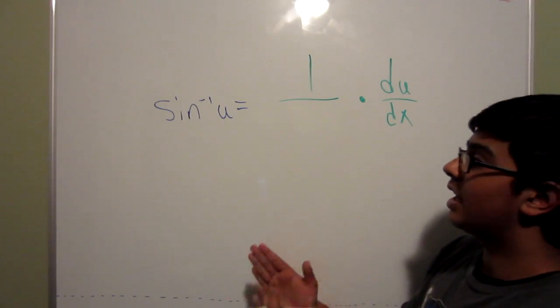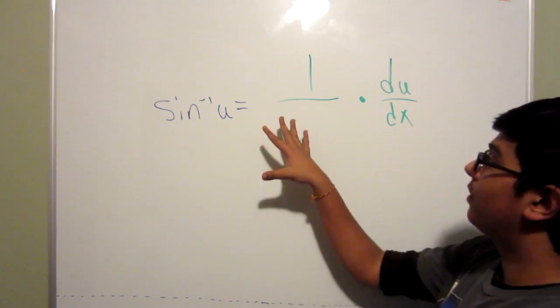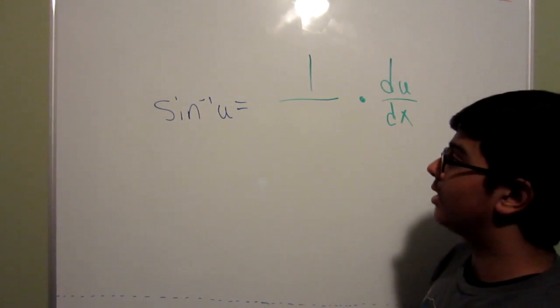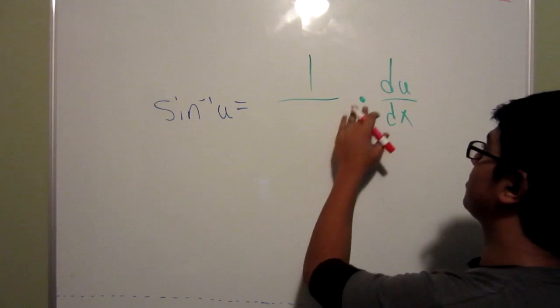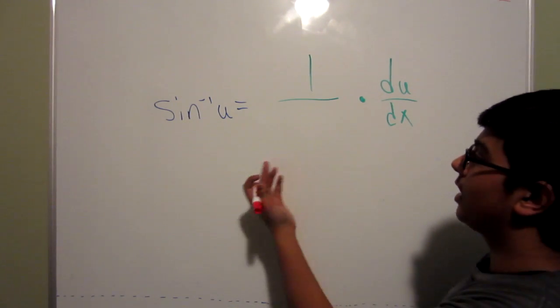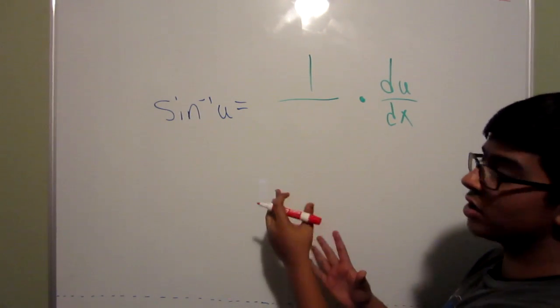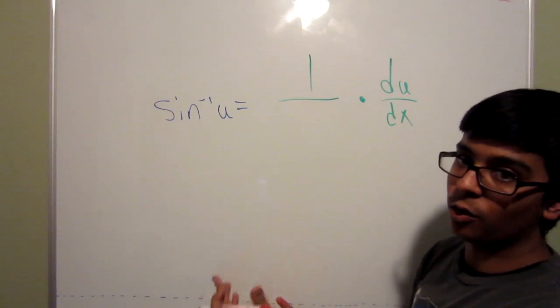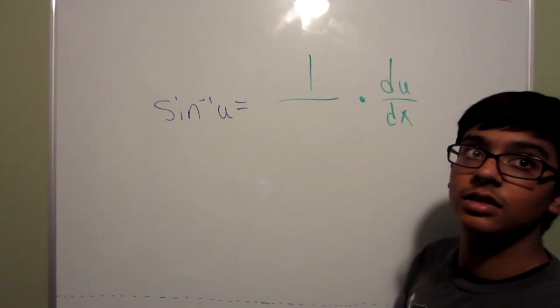To start off, we have the sine inverse of u. All of the formulas will always follow the same structure. We have 1 over something times du/dx. Now this is always the basic structure to all of the derivative formulas. Some will have a negative one, but we'll get into that later.